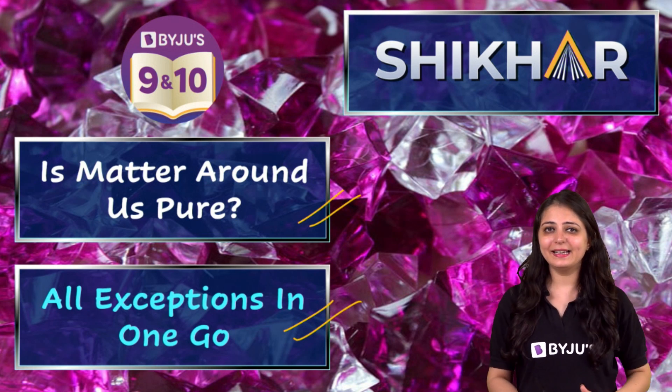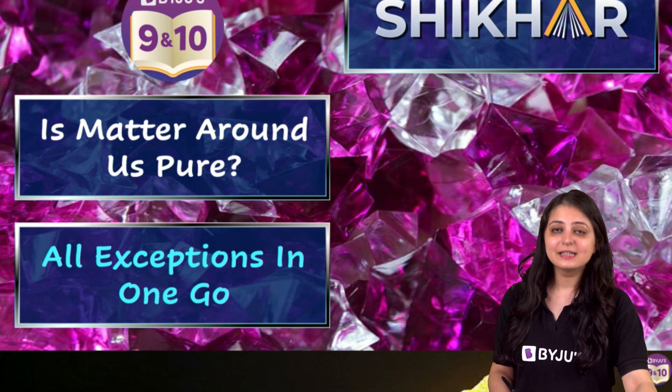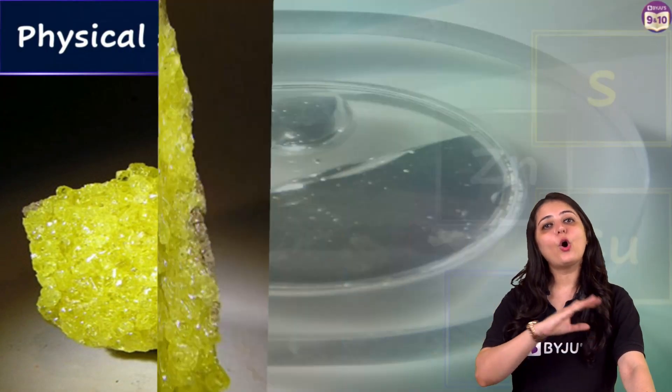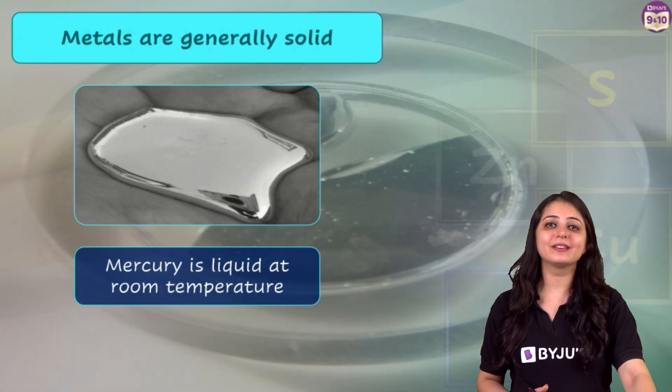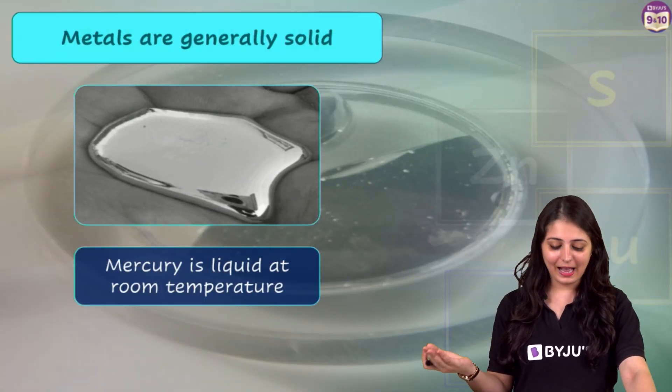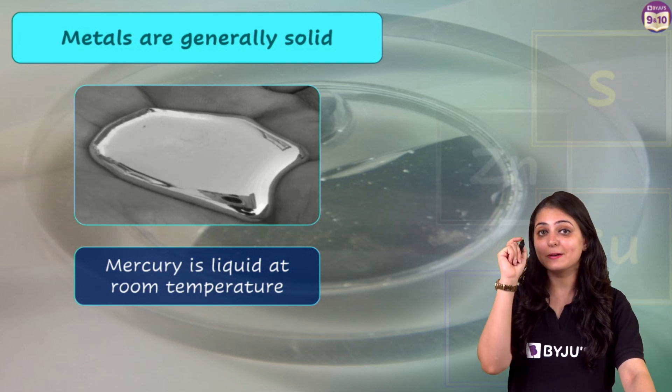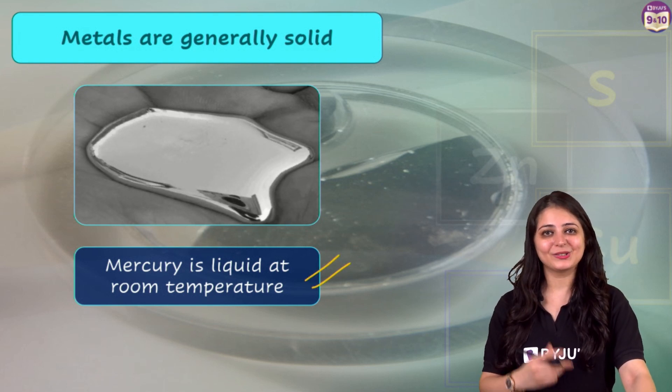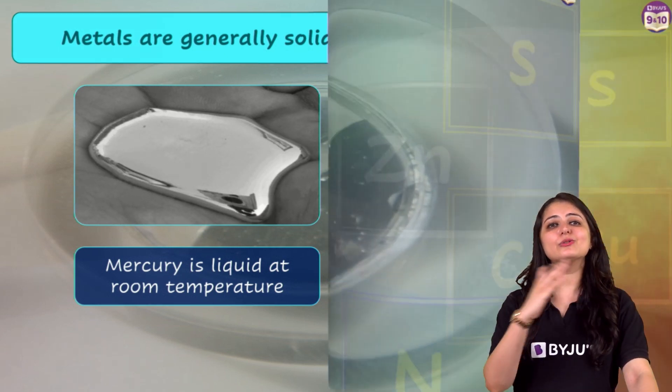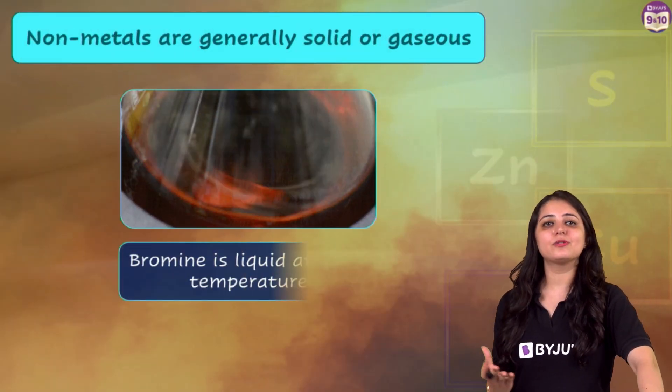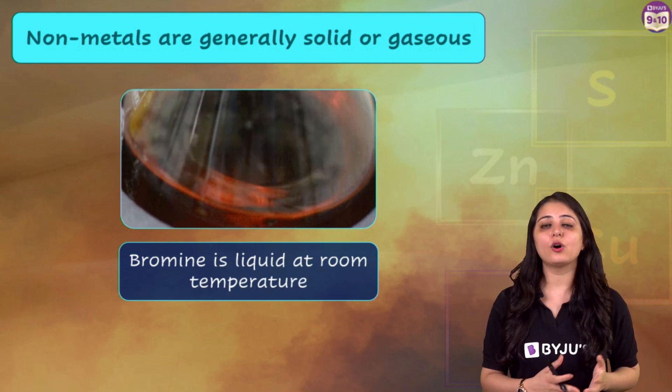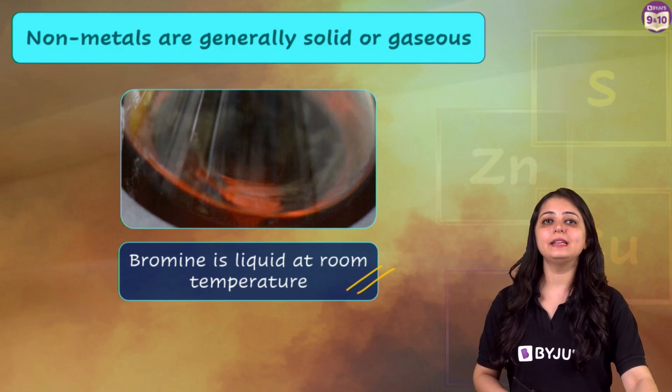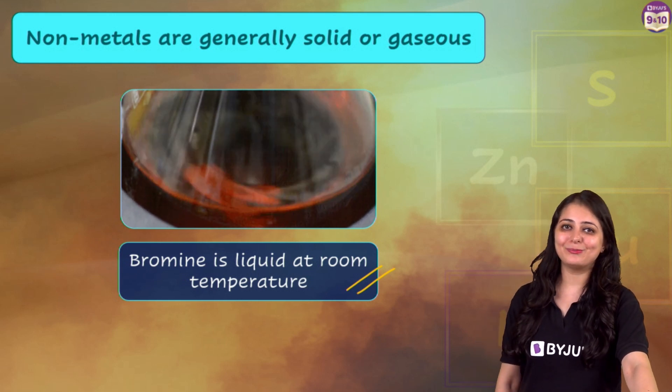In chemistry, metals and non-metals can be characterized by their physical and chemical properties. We can differentiate between them based on these properties. Today we'll be talking about the physical properties only. Let's get started. One of the properties is physical state: all metals except mercury are solids at room temperature, but mercury is liquid at room temperature. So that's an exception. Now coming to non-metals, generally non-metals exist as solids or gases at room temperature, but bromine is liquid at room temperature.